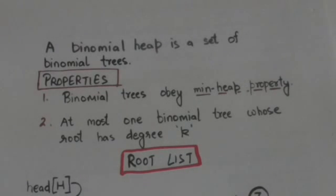And second property is in binomial heap, there must be at most one binomial tree whose root has degree k. It means in binomial heap, the degree of roots of all binomial trees must be different.